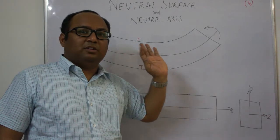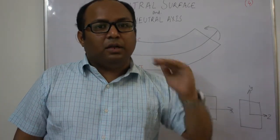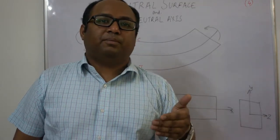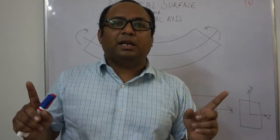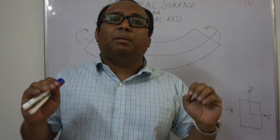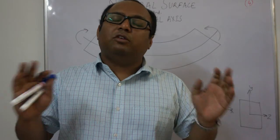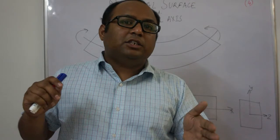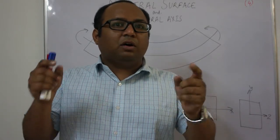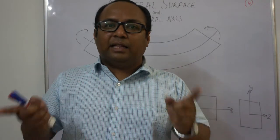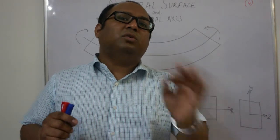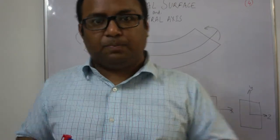The neutral axis is the intersection of the neutral surface with the cross-section — it is not experiencing any longitudinal stress. To summarize: the neutral surface is the layer among many layers which experiences neither tension nor compression in case of bending. The intersection of the neutral surface with the cross-section is what is called the neutral axis — that layer or line not experiencing any tension or compression.